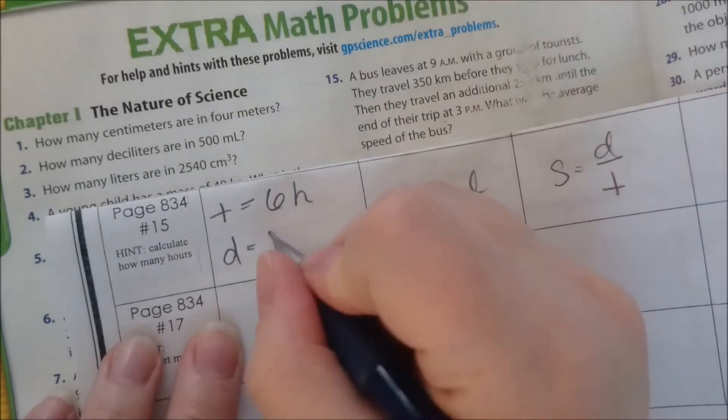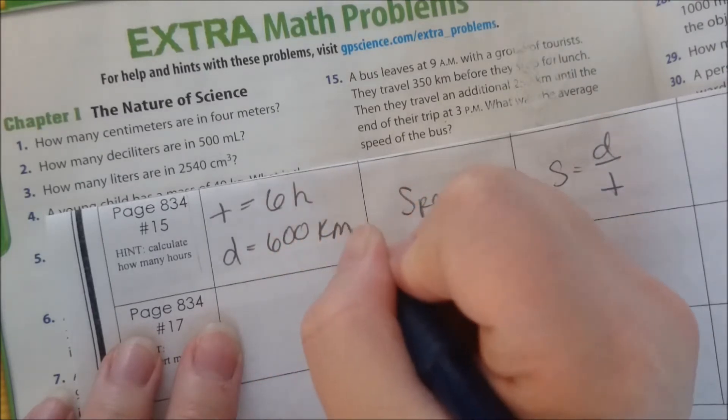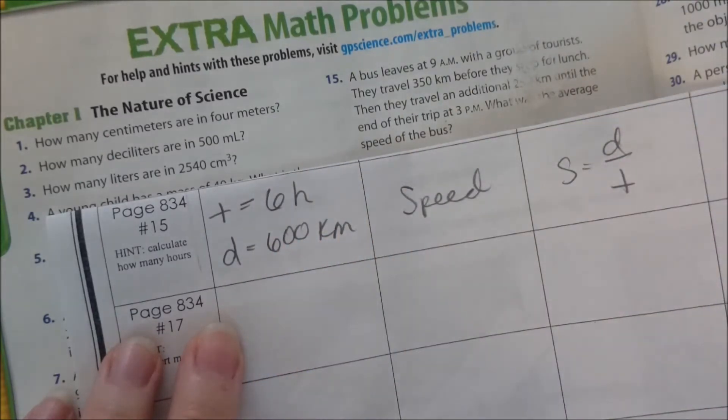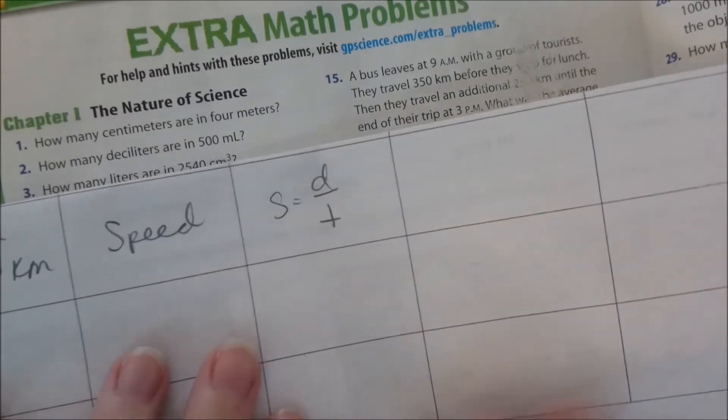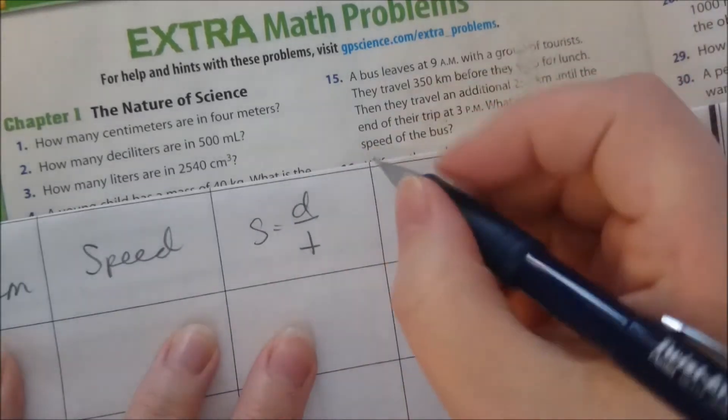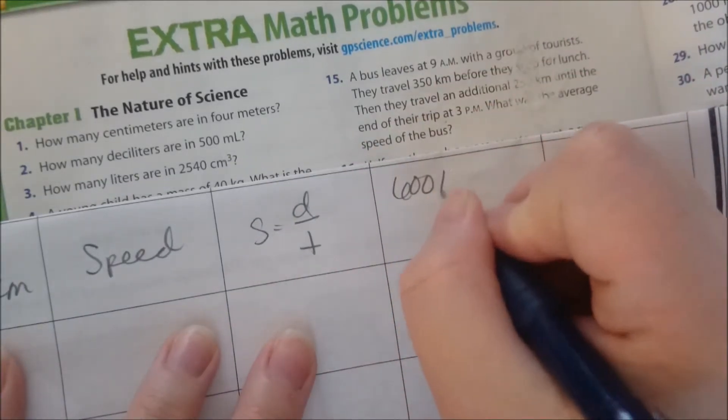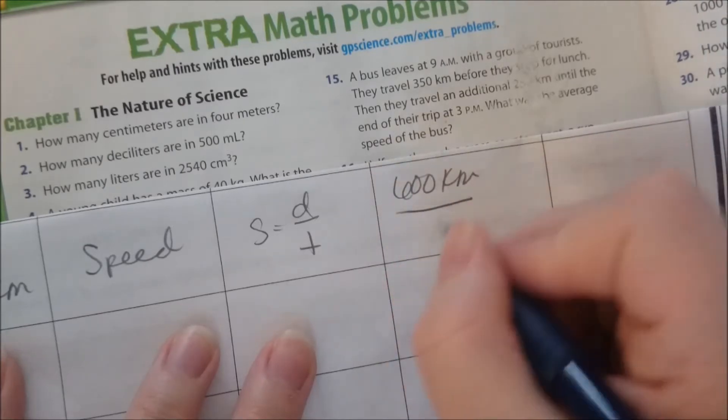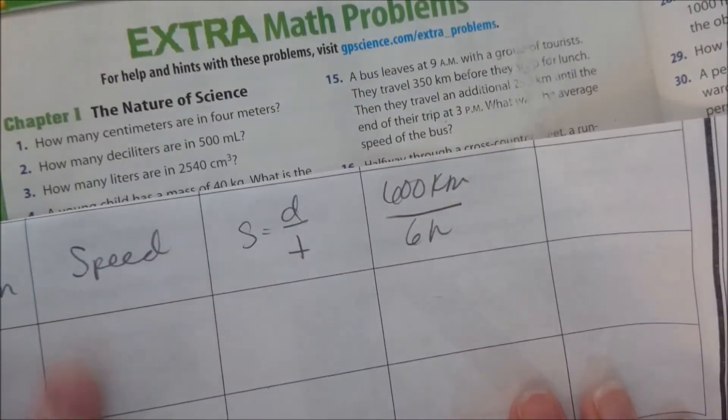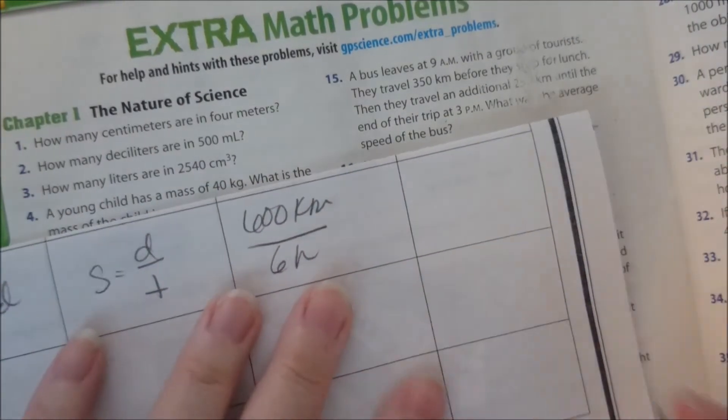Okay, so in order to calculate this we're just going to plug in. Distance is 600 kilometers, time is six hours. I can do that in my head—I don't know about you—that is 100 kilometers per hour.